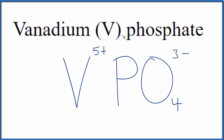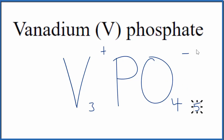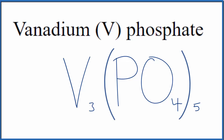Vanadium is the transition metal; phosphate is a group of nonmetals — a polyatomic ion. This is an ionic compound, and these charges need to balance. We can use a trick called the criss-cross method: take the 3 and move it over to vanadium, and move the 5 over to phosphate. Since we have 5 phosphate ions, we put parentheses around them. That makes the formula for vanadium 5-phosphate V₃(PO₄)₅.